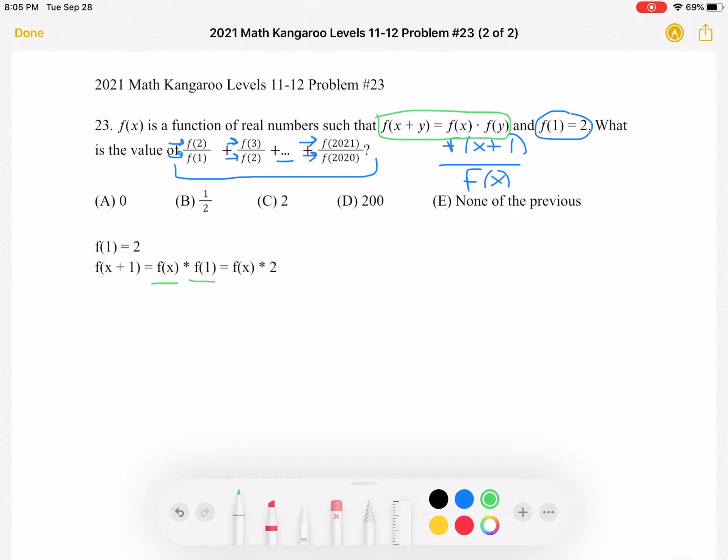And we just established, and it says in the problem, but just to remind you, f(1) is equal to 2. So f(x + 1) is really equal to 2 times f(x).